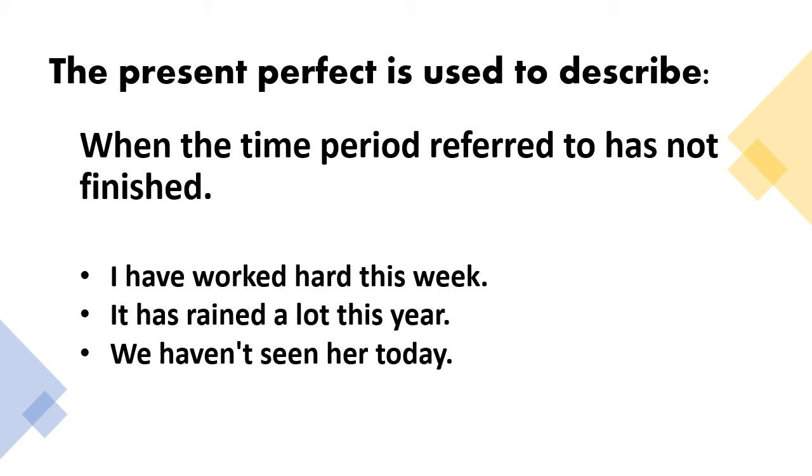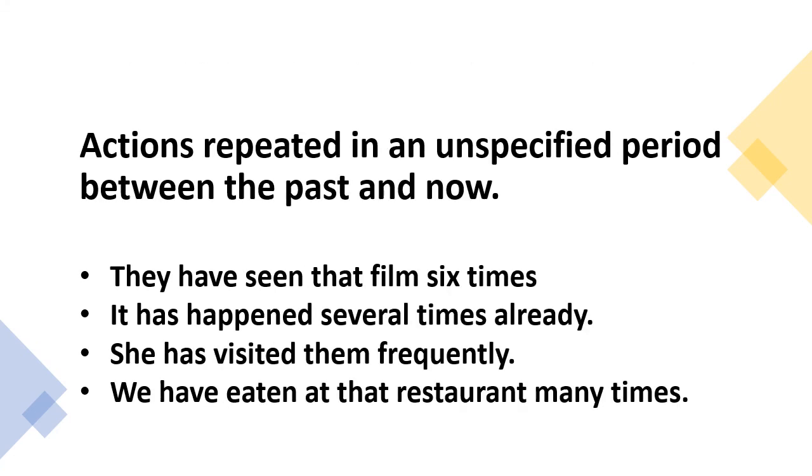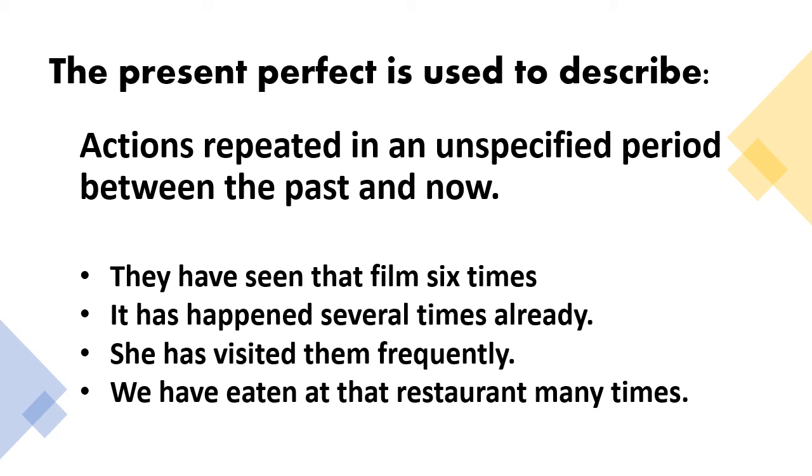It is also used to describe actions repeated in an unspecified period between the past and now. For example, they have seen the film six times. So, in the past they have seen it for six times and currently seeing the film. Another example is, it has happened several times already. So, it happened in the past and currently it still happens. Another example is, she has visited them frequently. So, she's been visiting them in the past and right now she frequently visits them. And another example is, we have eaten at the restaurant many times.